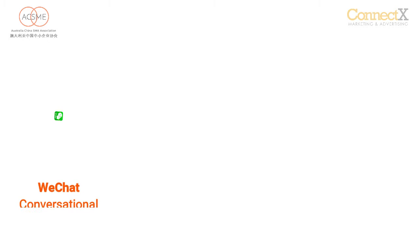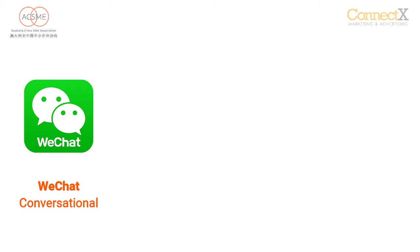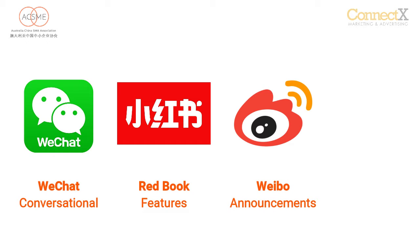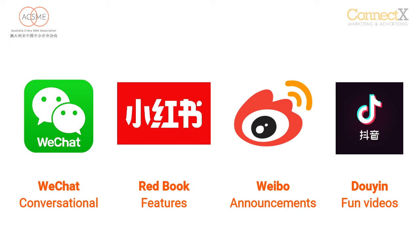People will make funny videos and they do live streaming as well. So WeChat is really conversational — to tell all your friends about the products that you like. Redbook is more about instructions, about explaining the features and benefits of products. And then we've got Weibo, which is more about announcements. And we've got Zouyin or TikTok, which is more fun videos that draw people to products.